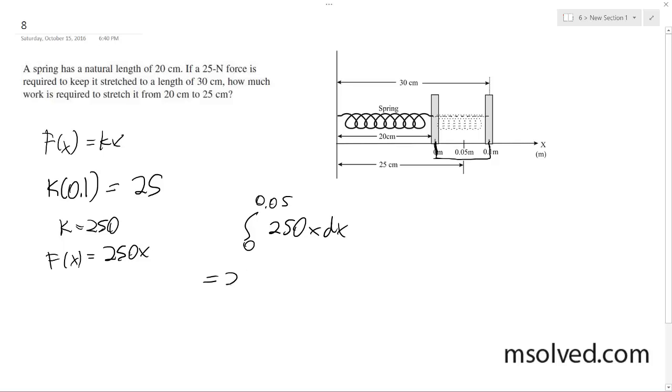Integrated, this is x squared over 2, 0 to 0.05 joules. Newton meters. What we end up here with is 125 times 0.0025, and we get work is equal to 0.3125 joules. All right, cool. That's it.